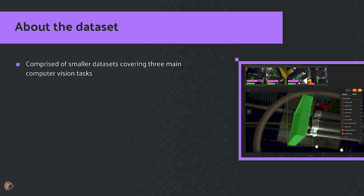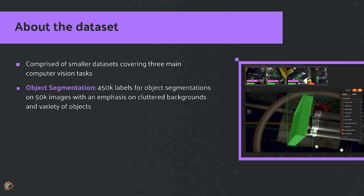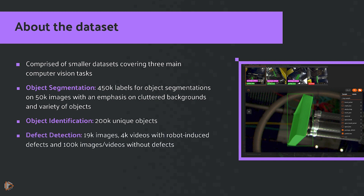The dataset itself is comprised of smaller datasets covering three main computer vision tasks. First, object segmentation — 450,000 labels for object segmentations on 50,000 images with an emphasis on cluttered backgrounds and a variety of objects. Second is the object identification dataset, which contains 200,000 unique objects. And lastly, the defect detection dataset, which has 19,000 images, 4,000 videos with robot-induced defects, and 100,000 images and videos without defects.